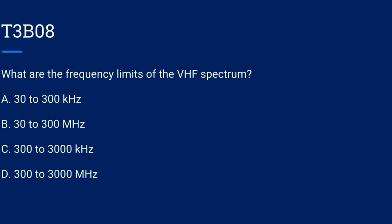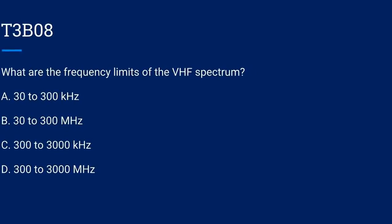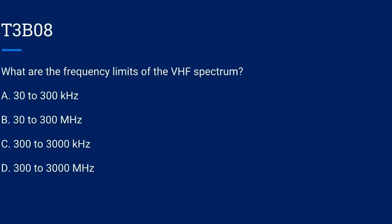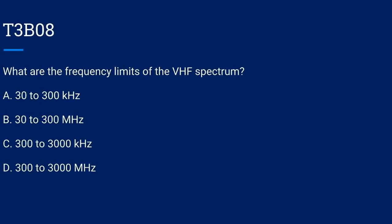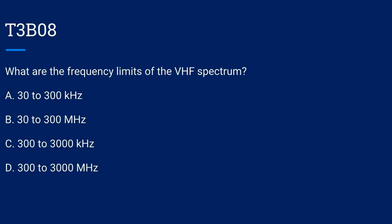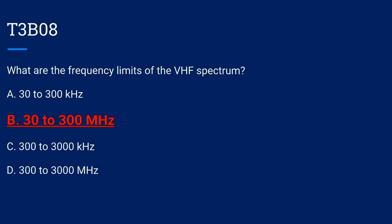T3B08. What are the frequency limits of the VHF spectrum? A. 30 to 300 kilohertz. B. 30 to 300 megahertz. C. 300 to 3000 kilohertz. Or D. 300 to 3000 megahertz. The correct answer is B: 30 to 300 megahertz.